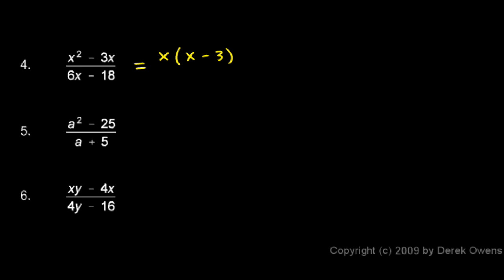And you can see that that's how it factors if you redistribute this x. I have x times x, gives me the x squared. And then I have the minus sign. And then I have x times 3, gives me the 3x. So that is equivalent to my original numerator.